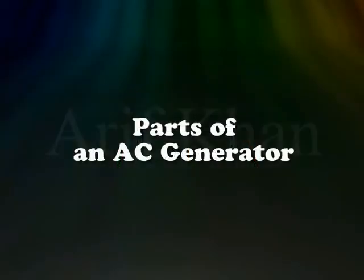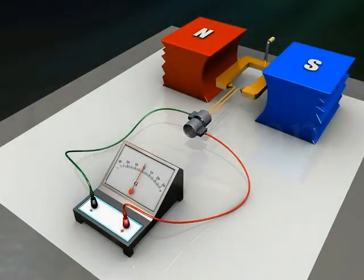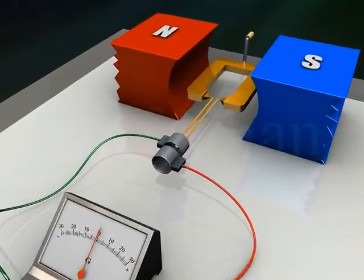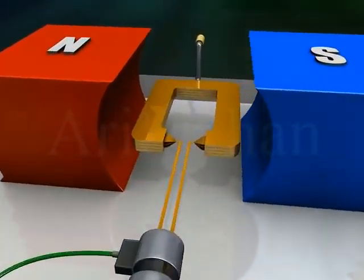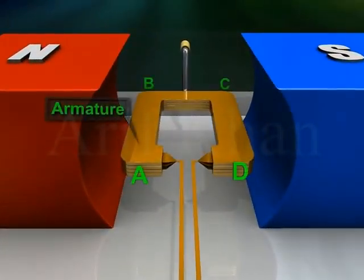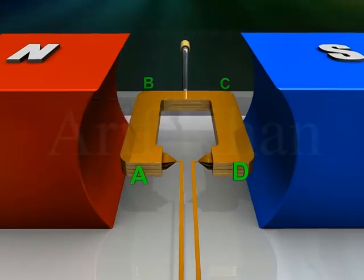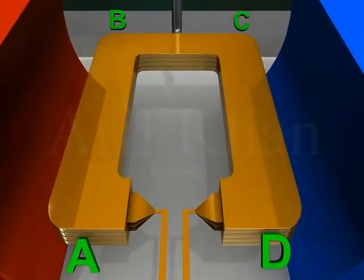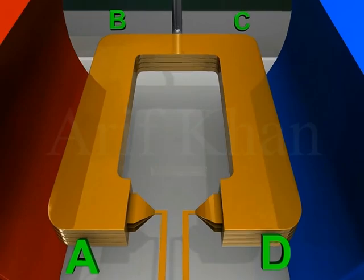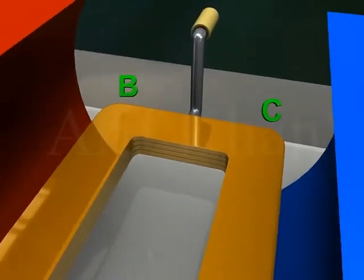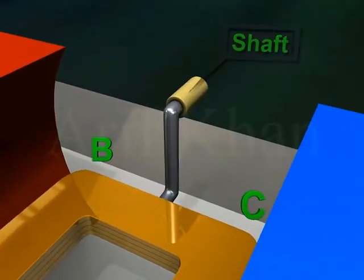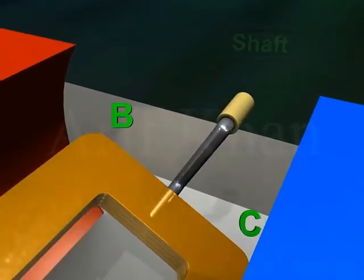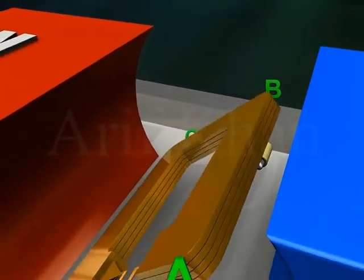Parts of an AC generator: an AC generator has an armature ABCD — it is a rectangular coil with many turns wound around a soft iron core — and a shaft, which can be rotated rapidly.